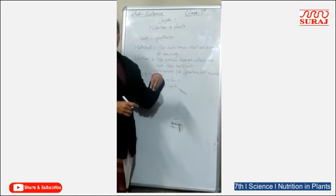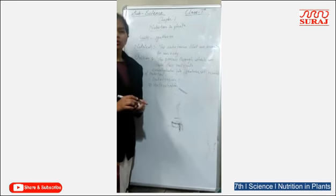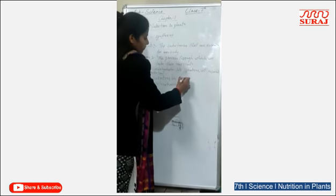Autotrophic means the organisms that prepare their own food. This is called Autotrophic mode of Nutrition. For example, plants.